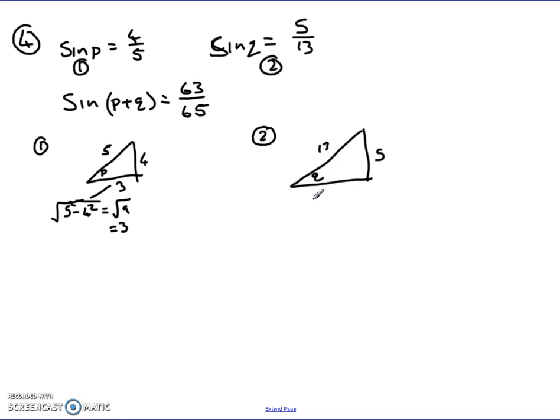because I know that it's the square root of 13 squared, take away 5 squared. 13 squared, take away 5 squared is 144, so it's square root of 144, which is 12. So I know that this side here is equal to 12.